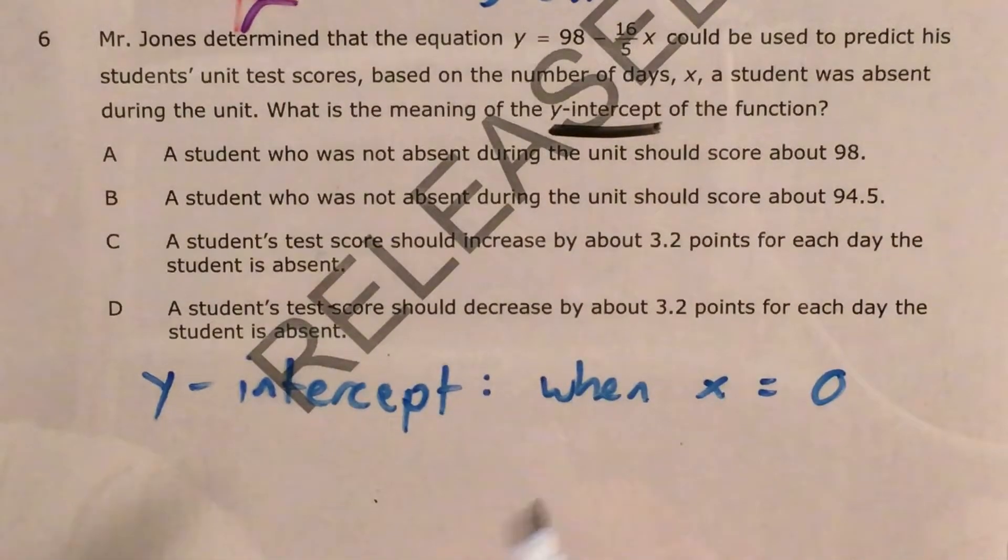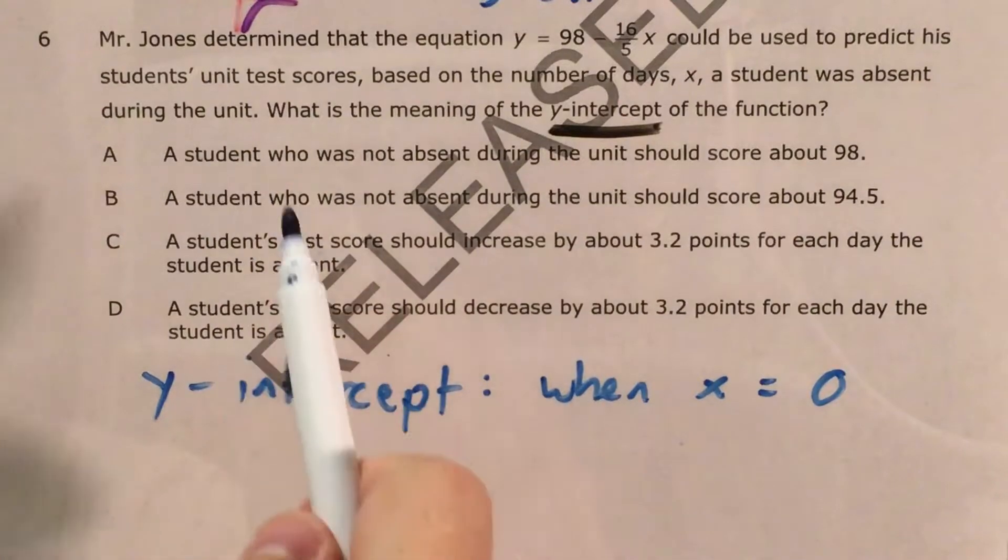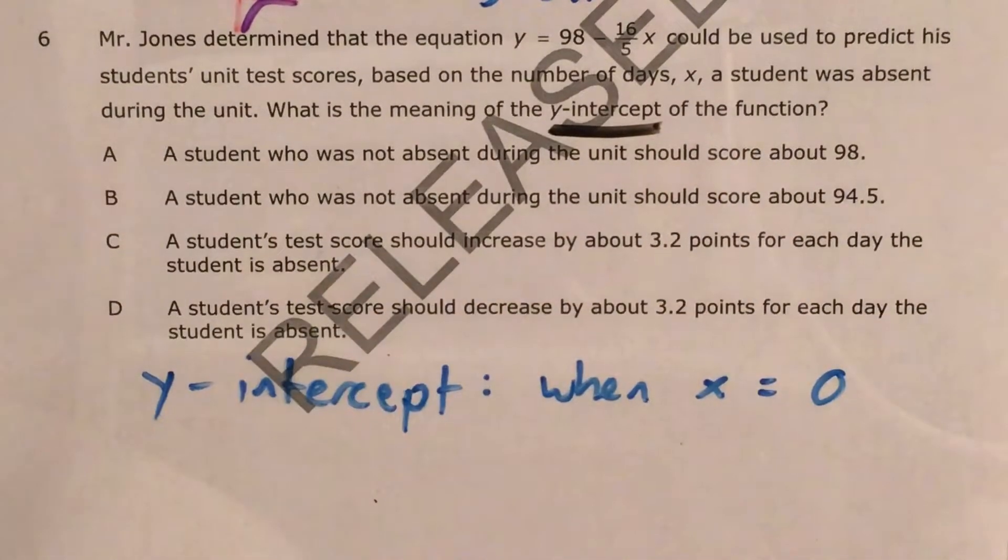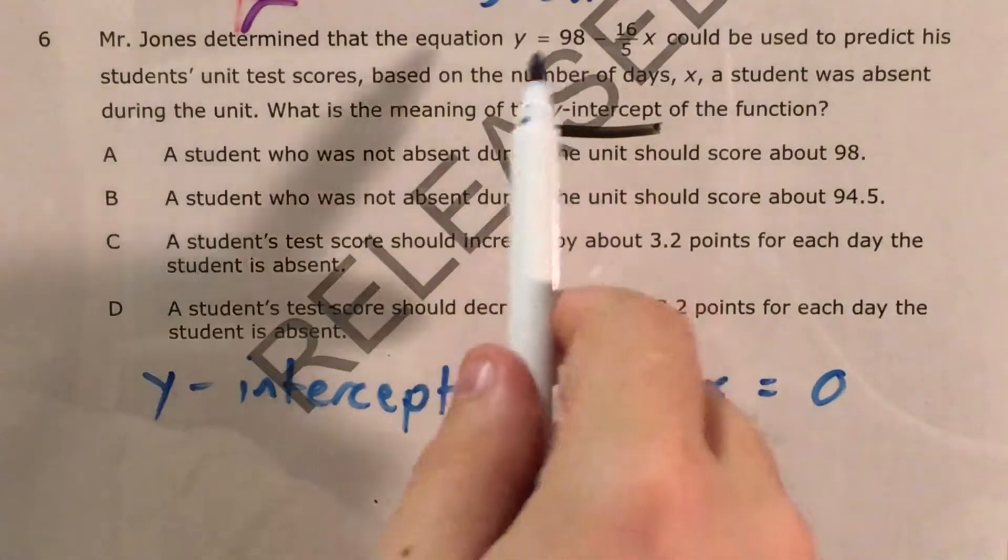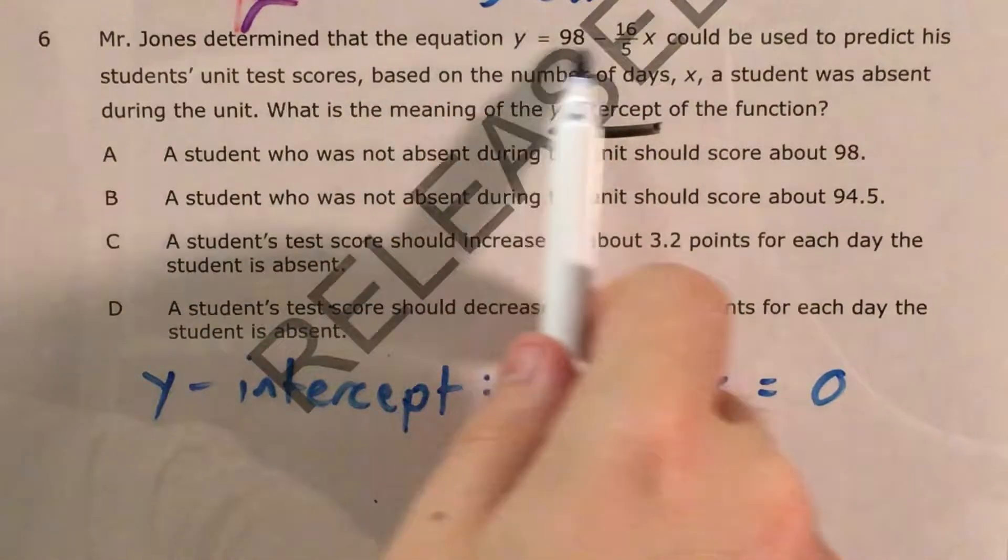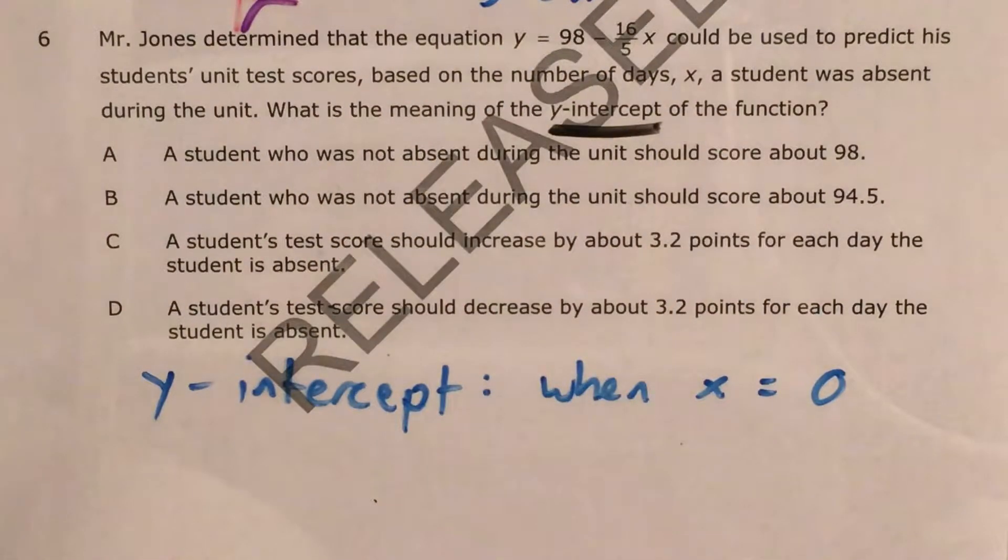So x, our independent variable, what we're in control of, so a student for the most part is in control of how often they're absent, and the number of days they're absent is going to predict their test score according to Mr. Jones' equation. We're looking for when x, our independent variable, the variable we plug in, equals 0.